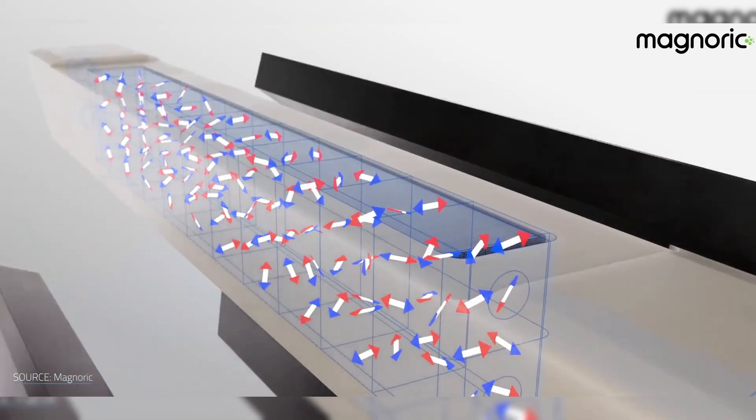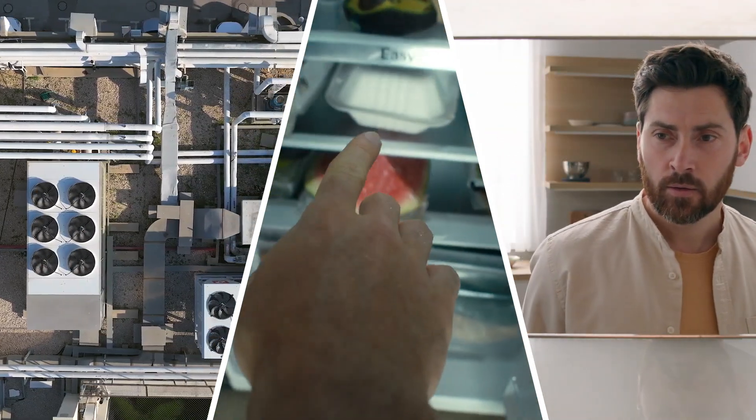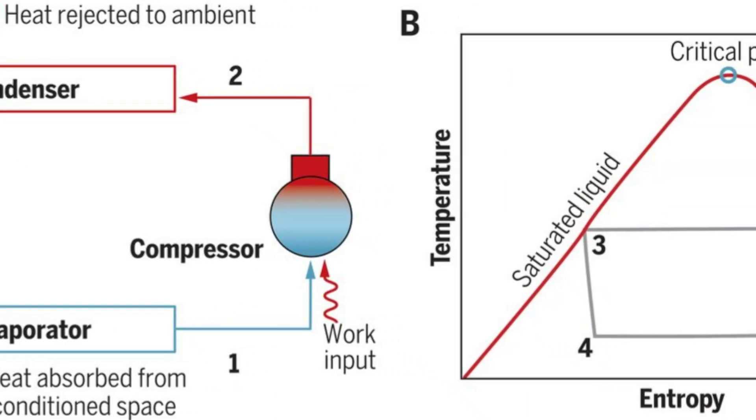Let's start with why we even need to rethink how cooling works. Most of the cooling devices in your life—fridges, freezers, air conditioners, heat pumps—all run on a process called the vapor compression cycle.